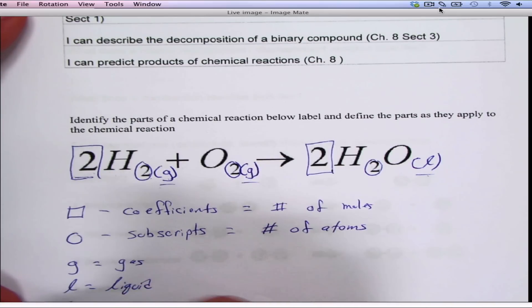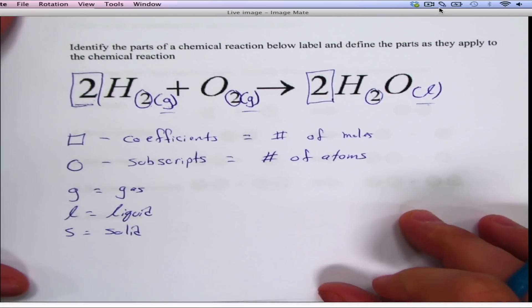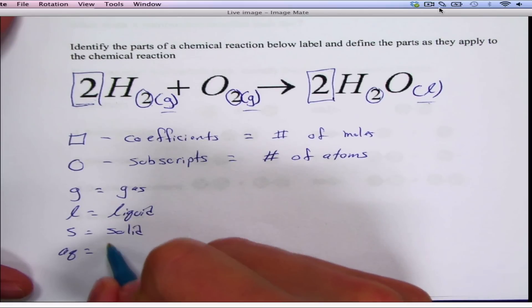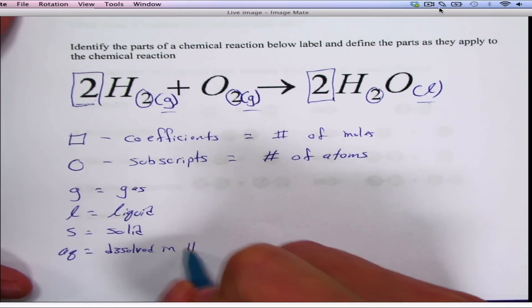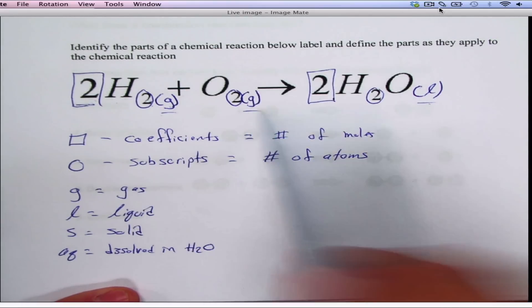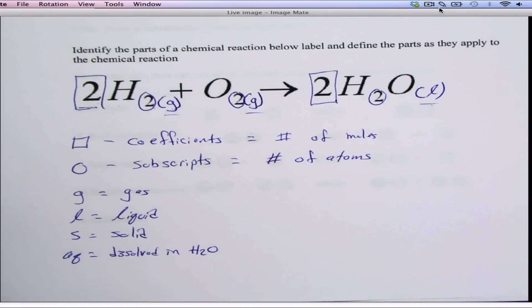You'll run into an S, which means it's a solid. And you'll also run into aq, which means it's dissolved in water. So those are the four things that could be where the G's and L's are. That just tells you the state of the substance: gas, liquid, solid, or aqueous.